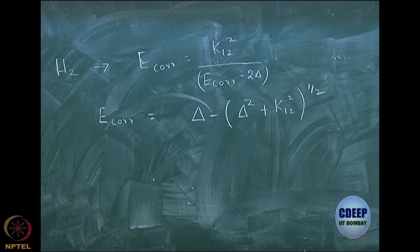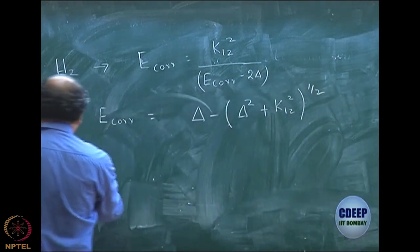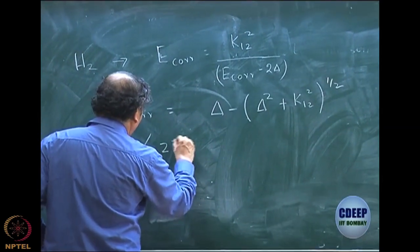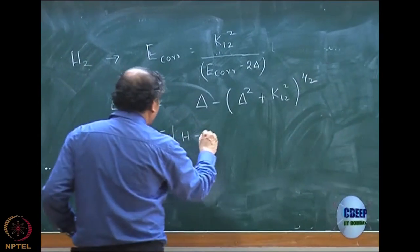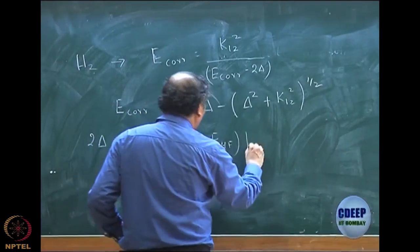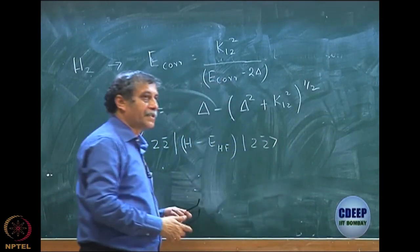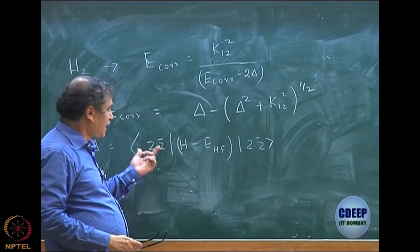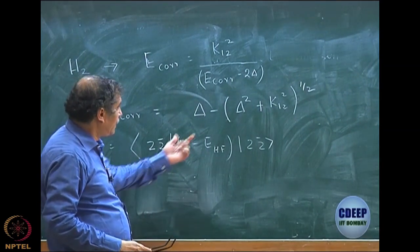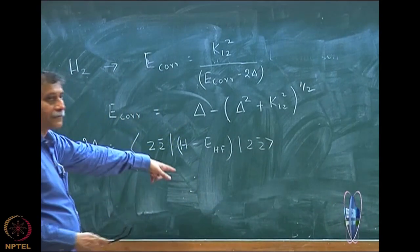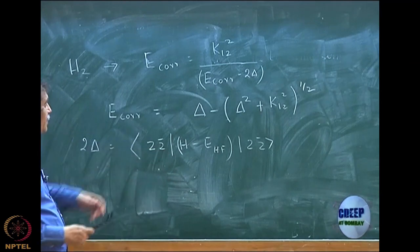Remember, 2 delta was the diagonal element of the matrix element of H minus E Hartree-Fock between the doubly excited configuration on both sides. That was your 2 delta. Delta is half of this. And if you remember, we first obtained E-correlation as C times K12, where C was the coefficient for the doubly excited determinant.